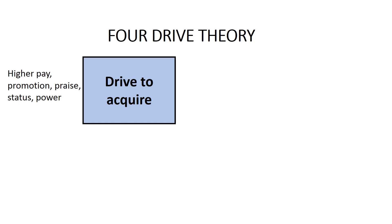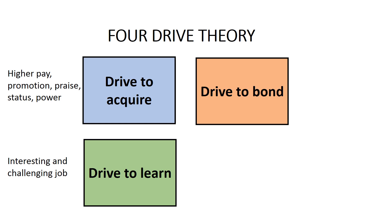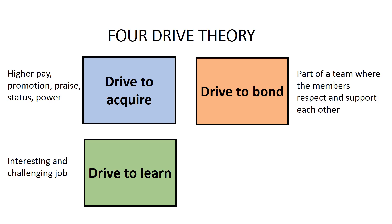The second drive is the drive to learn. This is an employee's drive or desire to have a job that is interesting and challenging. A strategy to satisfy this drive is to provide employees with challenging work that encourages them to learn new skills and knowledge. This will improve employee engagement and reduce staff turnover and absenteeism that is caused by having a boring job. The third drive is the drive to bond — this is an employee's drive or desire to be part of a team where members respect and support each other. A strategy to satisfy this drive is to develop a corporate culture of collaboration and teamwork.